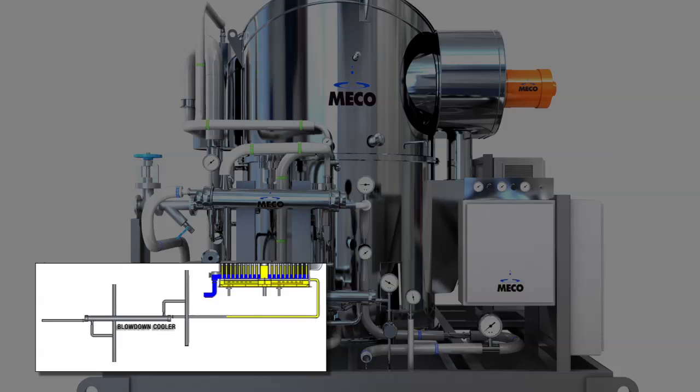A portion of the feed water in the bottom of the evaporator is removed and discharged to waste to control the concentration in the evaporator.